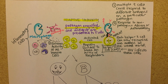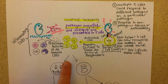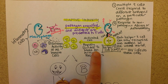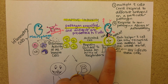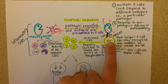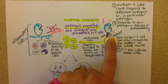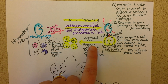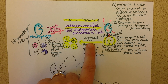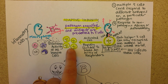We're back for Adaptive Immunity Part 2. We had ended with how a helper T cell gets activated. It gets activated by matching up with an antigen, and once it matches with an antigen, it becomes activated. Once it's activated, it makes a bunch of copies of itself.